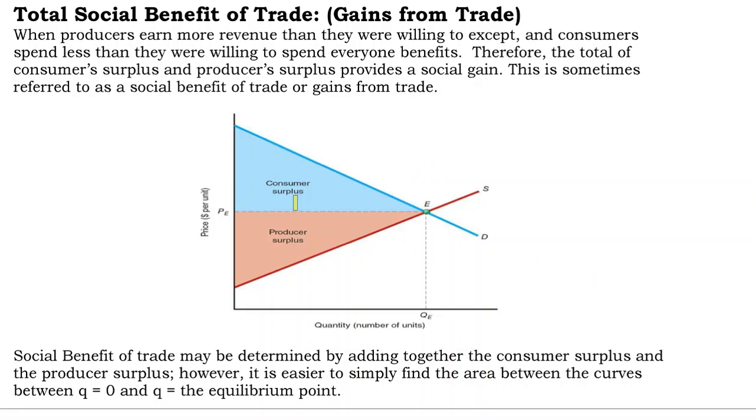At the equilibrium price, which would be over here on the vertical axis, the quantity that consumers demand is exactly equal to the quantity that producers are willing to supply. And so everything is in equilibrium.